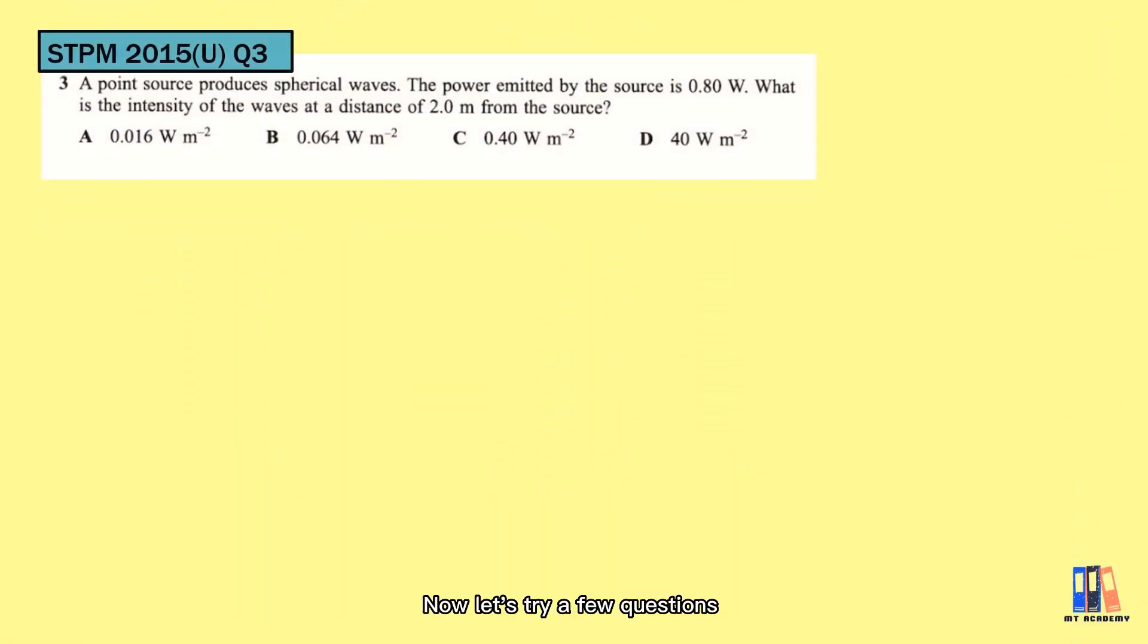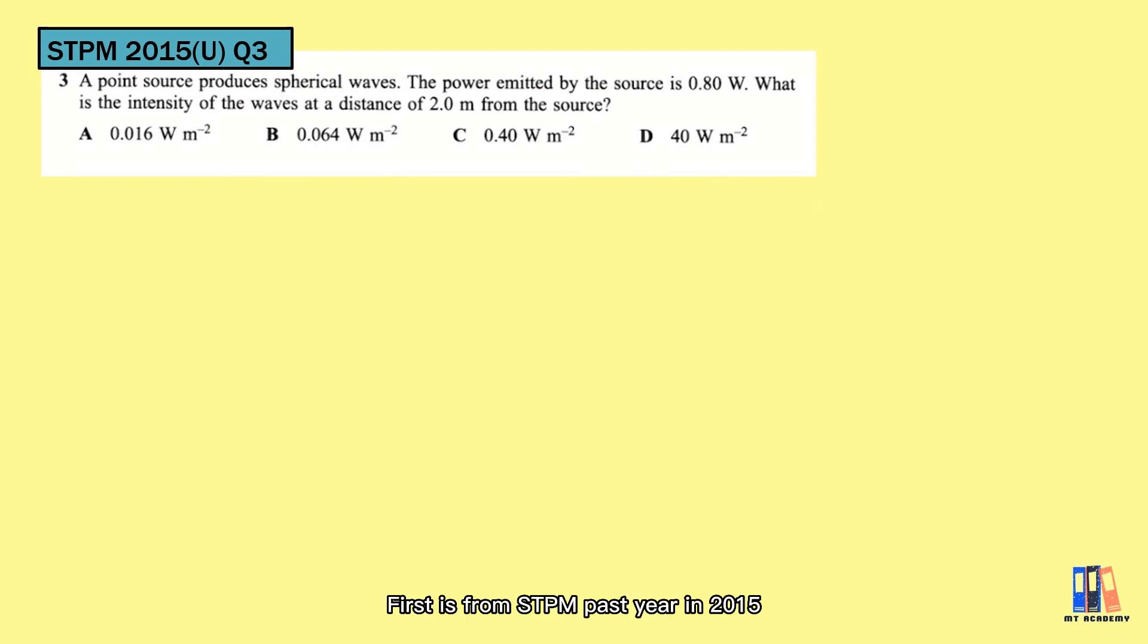So now, let's try a few questions. First is from STPM 2015. The question provided the power and the distance. So we just apply the formula of intensity equals the power divided by area which is 4πr², and the answer is 0.016 watt per meter square.